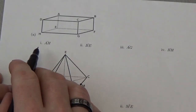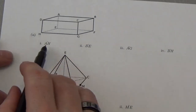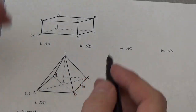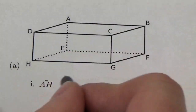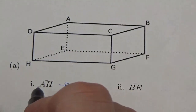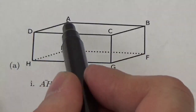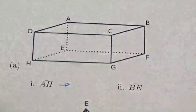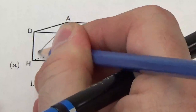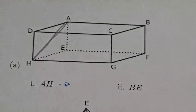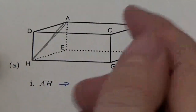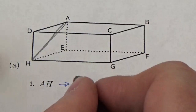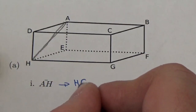What we're trying to do here is label the line segment that is the projection of each one of these onto the base. First, I want to know what is the name of the line segment that AH gets projected onto. AH is this line segment right here. If I'm projecting it down onto the base plane, H is already in the base plane, so that's going to stay the same. But A, when it gets projected down, is going to go to E. So this is going to be the line segment HE.